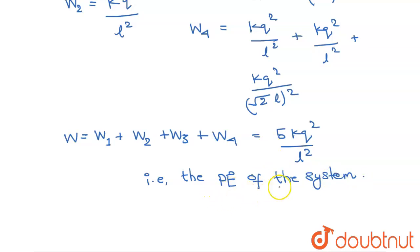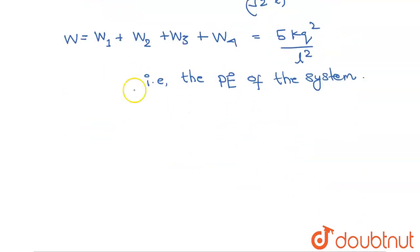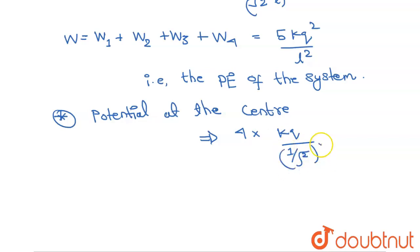Now the potential at the center. This will be equals to 4 times k q over root 2 L whole squared, which is simply 8 k q over L squared. So this is not 1, this is L, L squared. Okay, so this will be our answer.